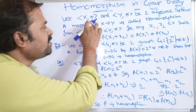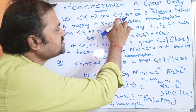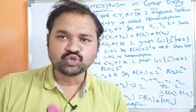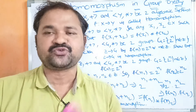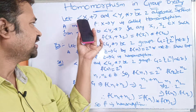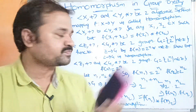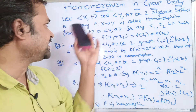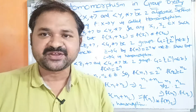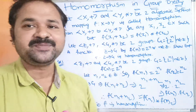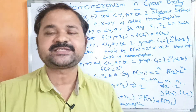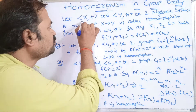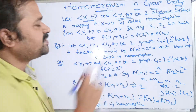Let (x, +) and (y, ⋆) be two algebraic systems. Here x is a set and + is a binary operation performed on the set x. Similarly, y is a set and ⋆ is a binary operation performed on the set y. So we have two groups: (x, +) and (y, ⋆).